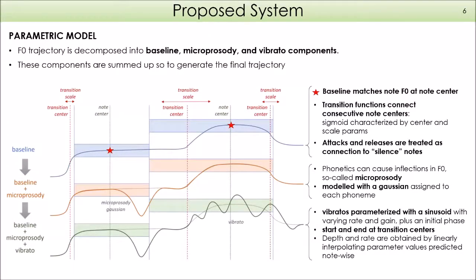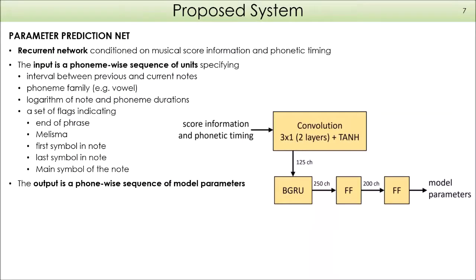Transition functions are used to connect consecutive note centers and are characterized by sigmoid functions. Attack and release are considered as connections to silence notes, characterized by an attack and release interval. The microprosody is modeled with a Gaussian assigned to its phoneme. Vibrato is characterized with a sinusoid with varying rate and gain and an initial phase. Vibrato starts and ends at transition centers, and depth and rate values are obtained from linear interpolation of predicted parameters.